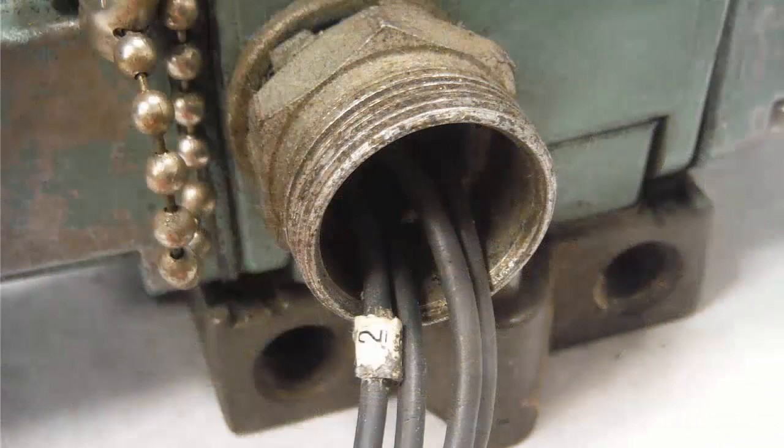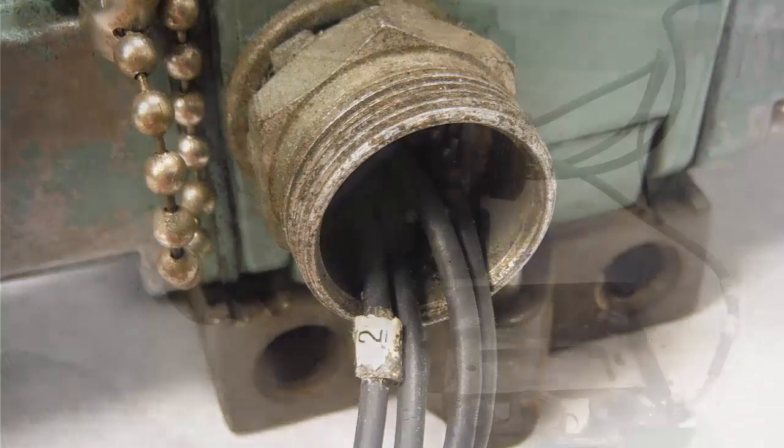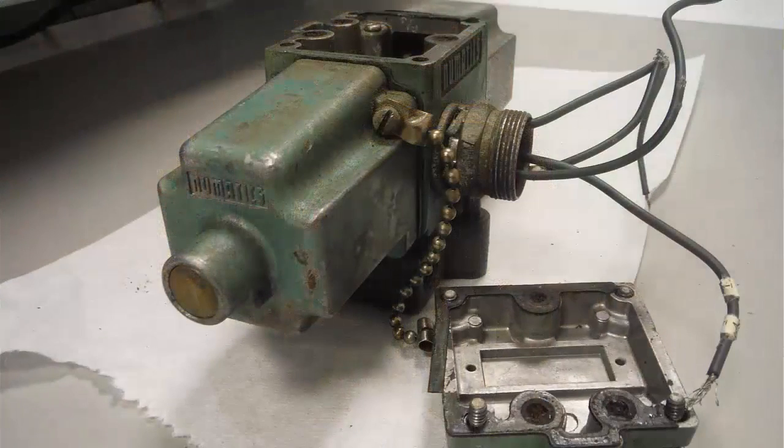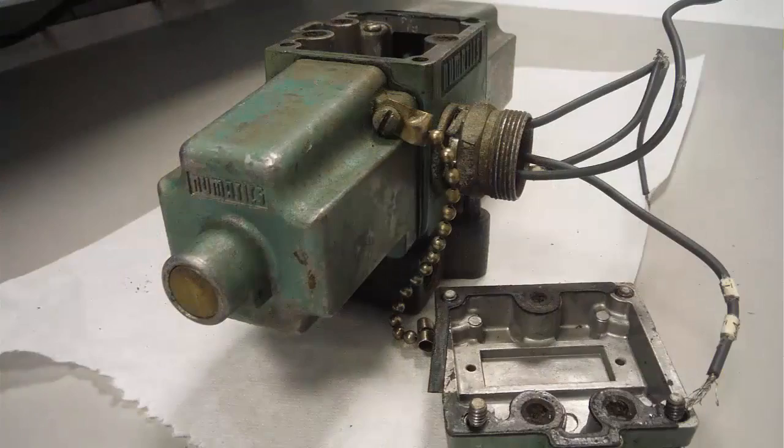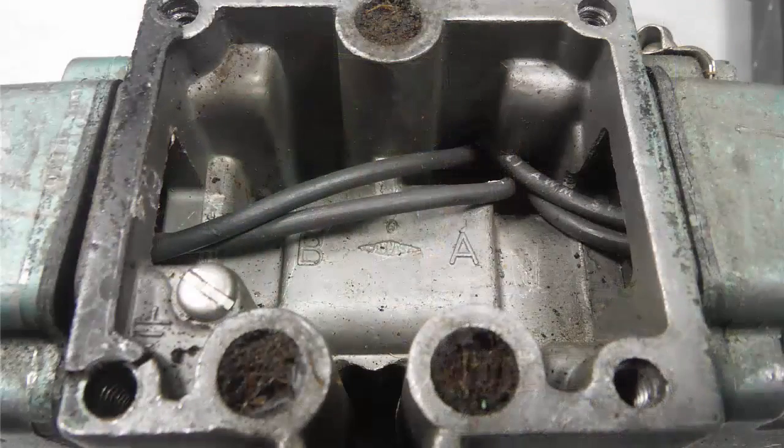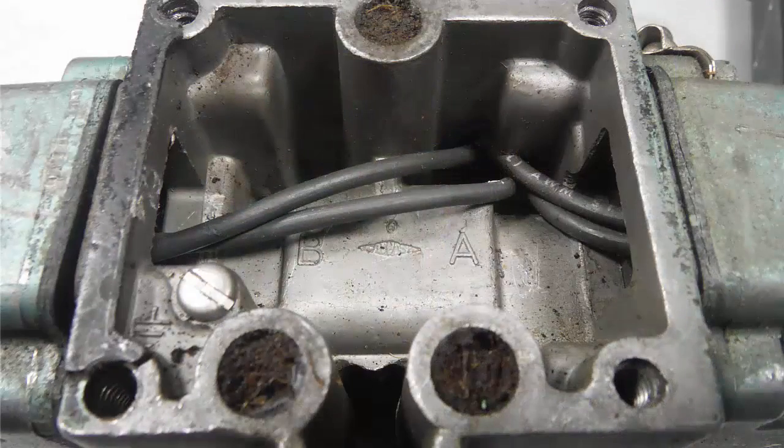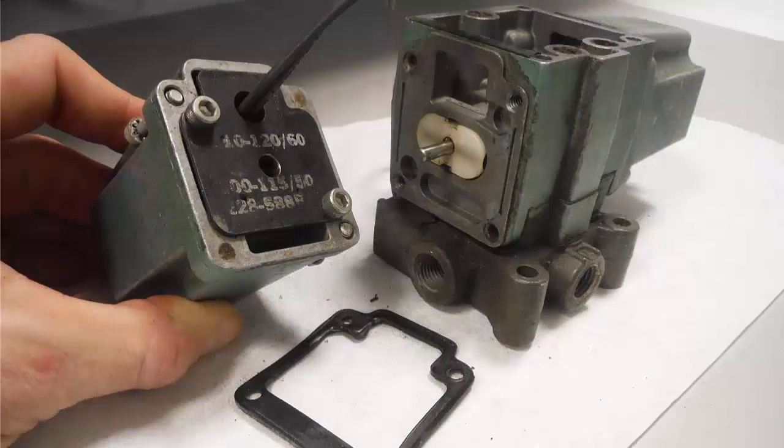The base plate features stamped port markings obscured by generations of accumulated sawdust. The electrical connections to the two coils poke out the back. If these wires weren't labeled, you can pop the top off the valve to see which connection goes to which coil. Notice A is stamped on the right and B is stamped on the left.